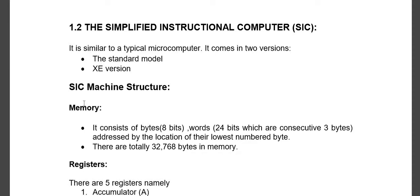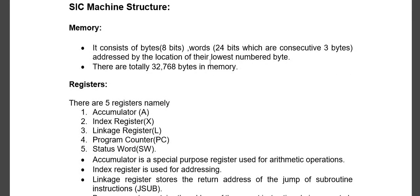The first category is Memory. In Memory, one byte contains eight bits and one word contains three bytes. That means one word contains twenty-four bits — eight into three equals twenty-four. And there are thirty-two thousand seven hundred and sixty-eight bytes in memory, meaning two raised to fifteen memory locations are there.